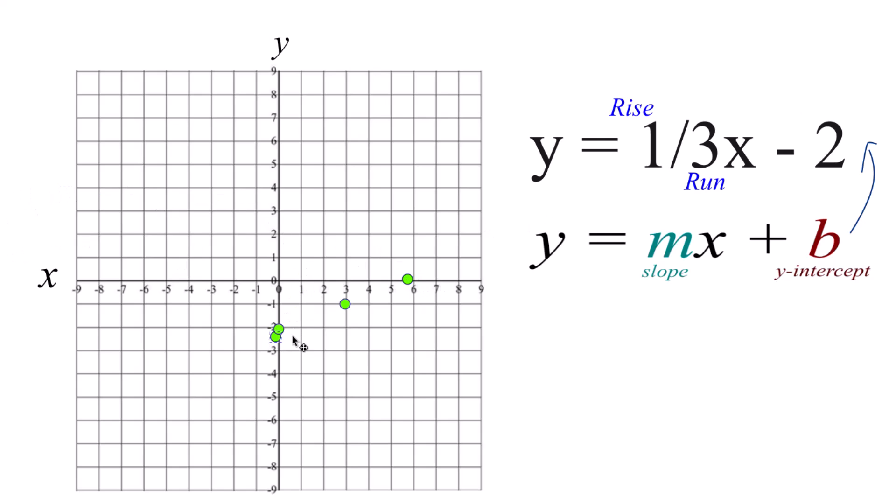Likewise, we can go in the opposite direction. We can come down here and go down 1 and over 1, 2, 3 to the left. Down 1 over 1, 2, 3 to the left. And all those points are on the line as well.